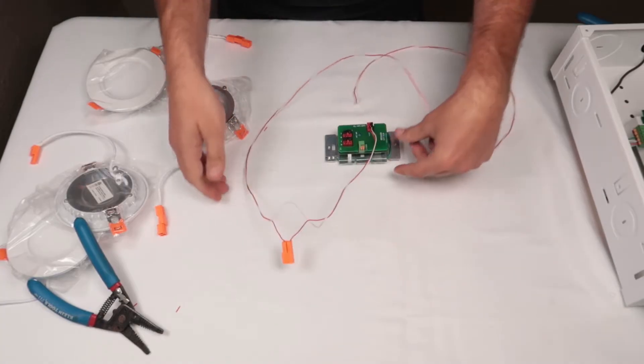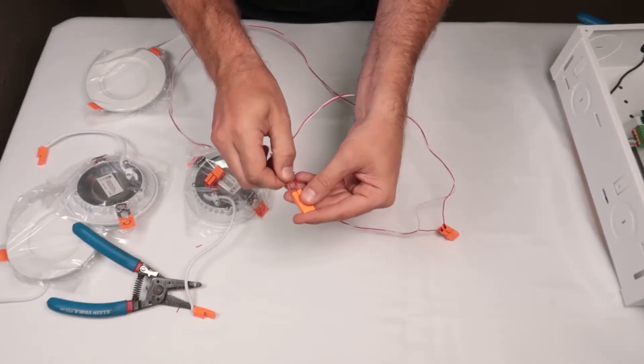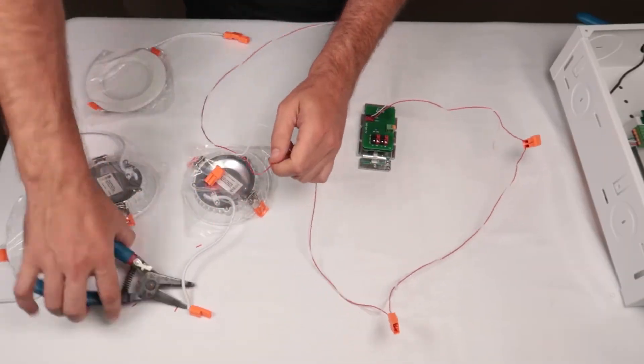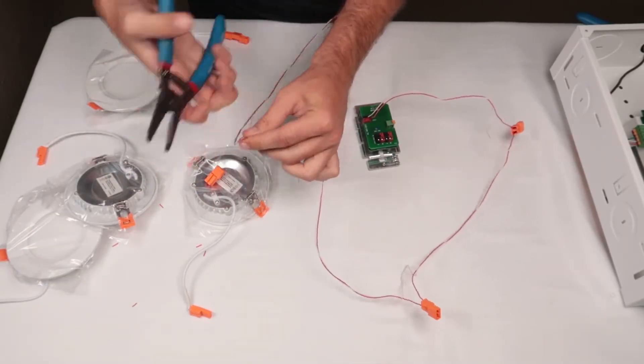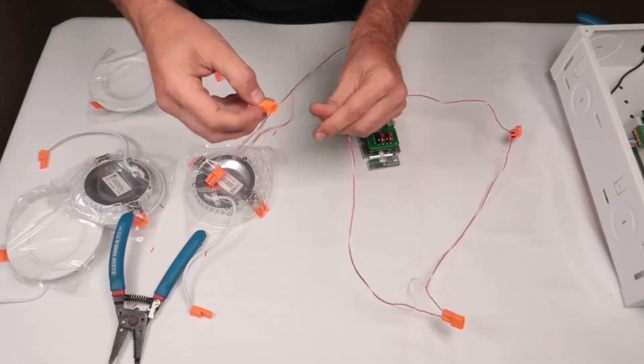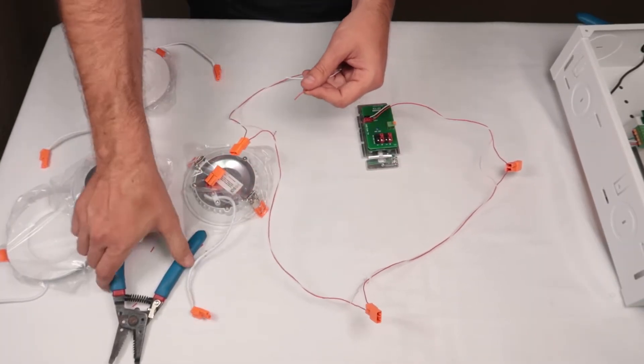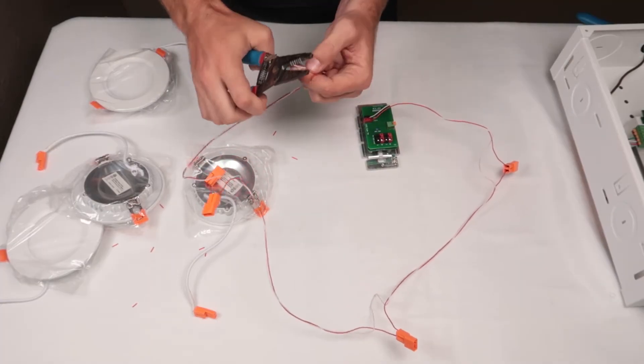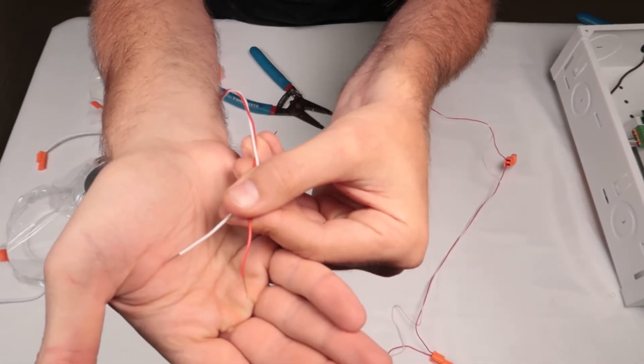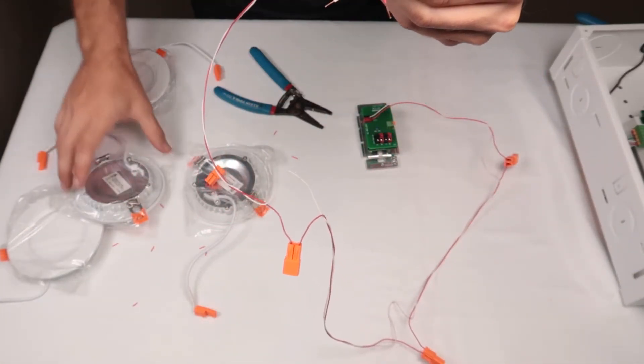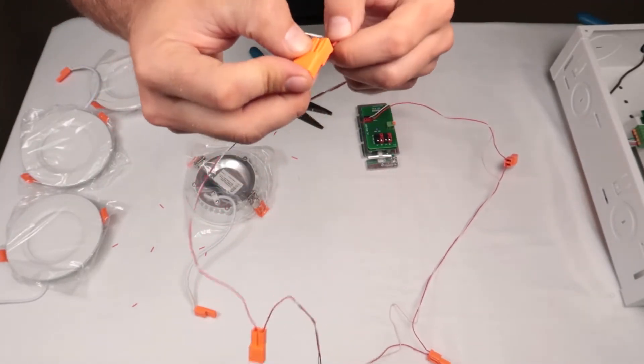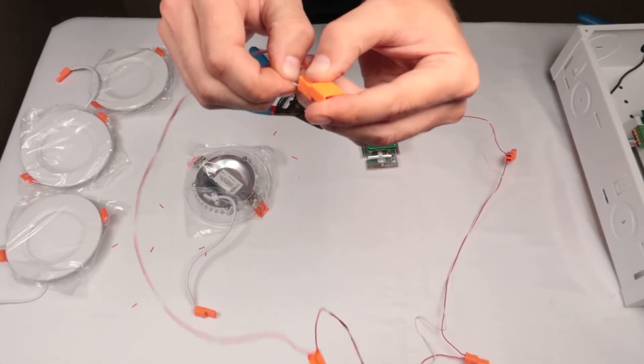Now we follow this pattern for the next two lights. When we get to the end of the line, we use the white wire on the negative port of the connector. Since we didn't make any cuts to the white wire, it will flow without interruption back to the negative terminal of the wall switch.